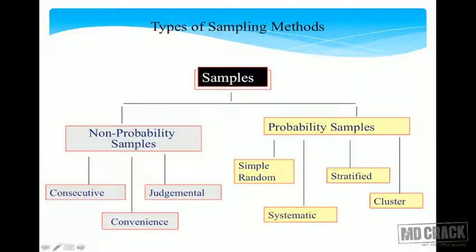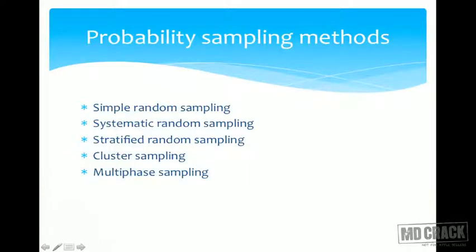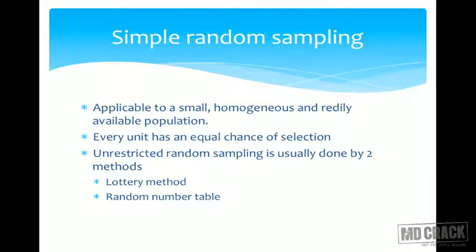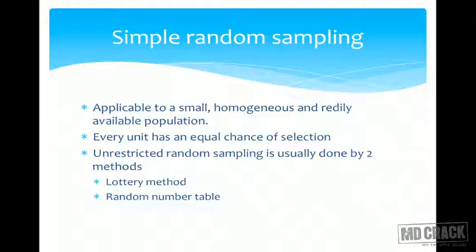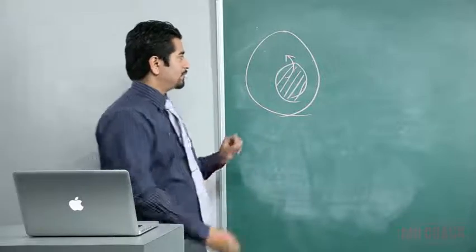Coming to probability sampling methods: probability sampling essentially means randomly — people randomly come into my study. Methods include simple random sampling, systematic sampling, stratified sampling, and cluster sampling. Simple random sampling is applicable to small, homogeneous and readily available populations. Every unit has an equal chance of selection. It is usually done by lottery method or random number method.